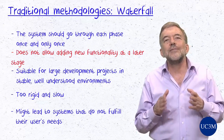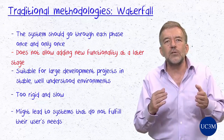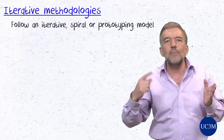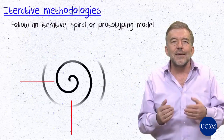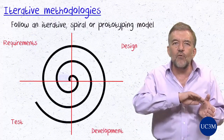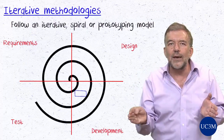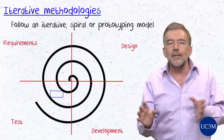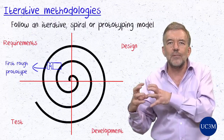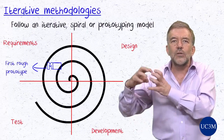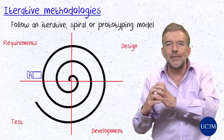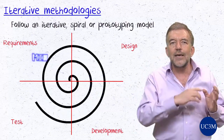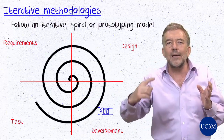To tackle these issues, other methodologies follow an iterative, spiral, or prototyping model. As those names suggest, it involves going through the above-mentioned phases relatively quickly, thus leading to a first rough prototype. This prototype then goes again through the same phases, gradually improving in each cycle, thus advancing in a spiral-like manner.